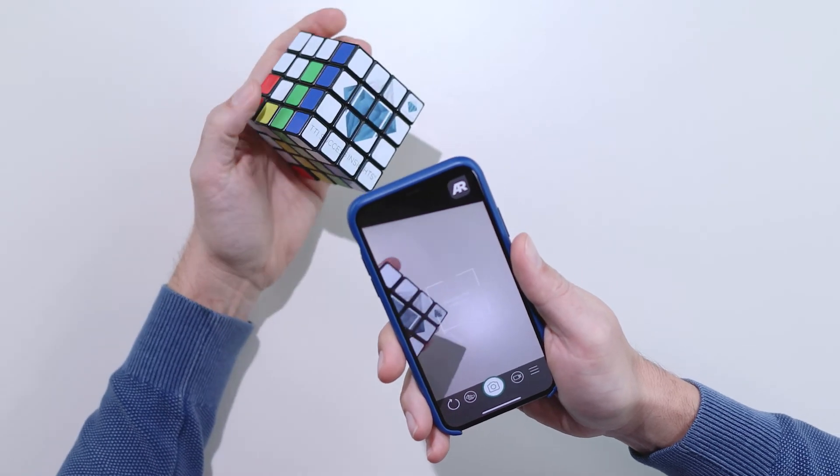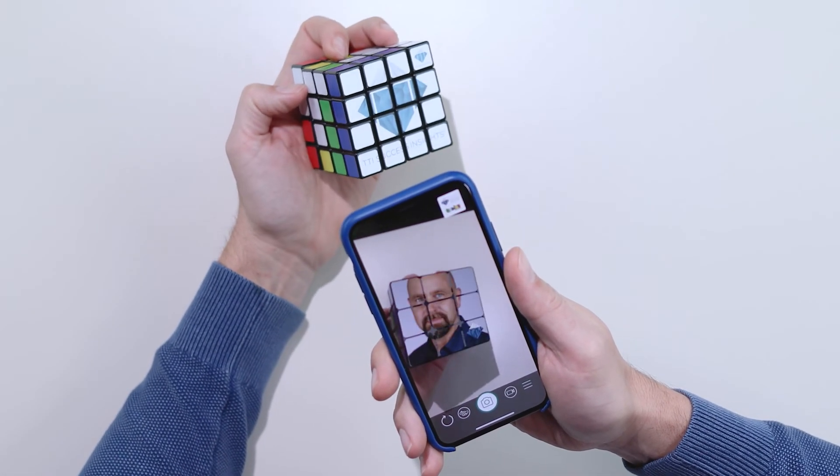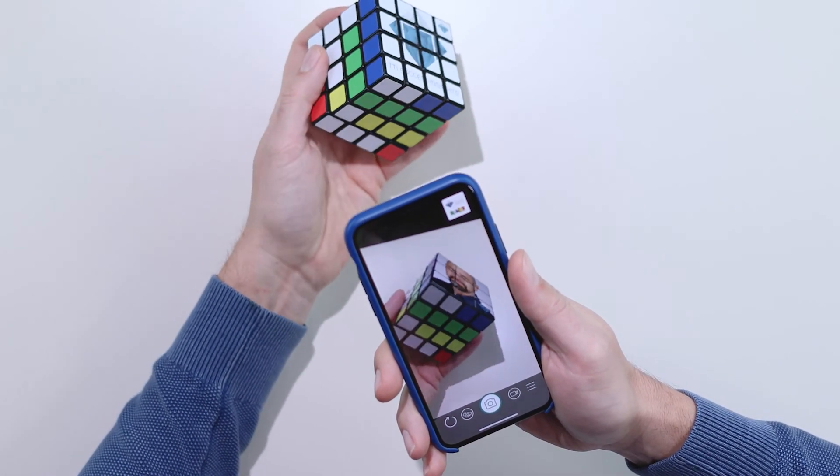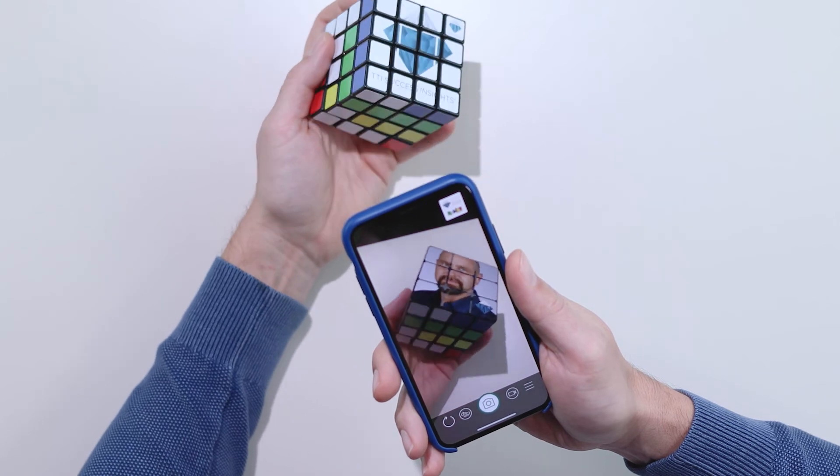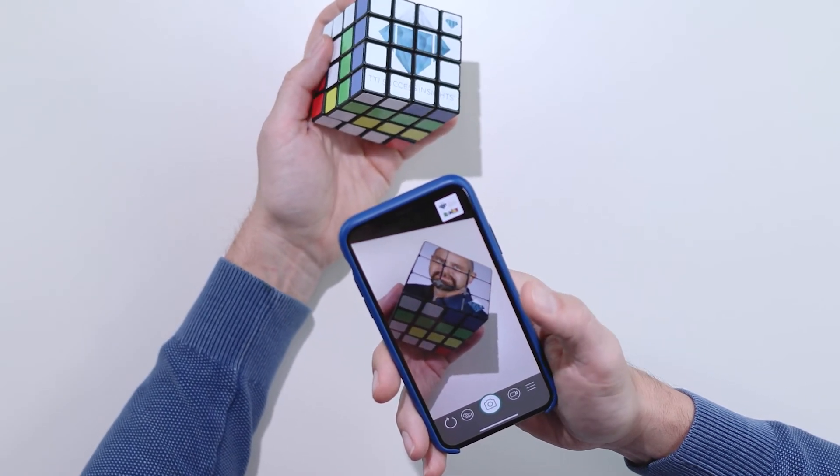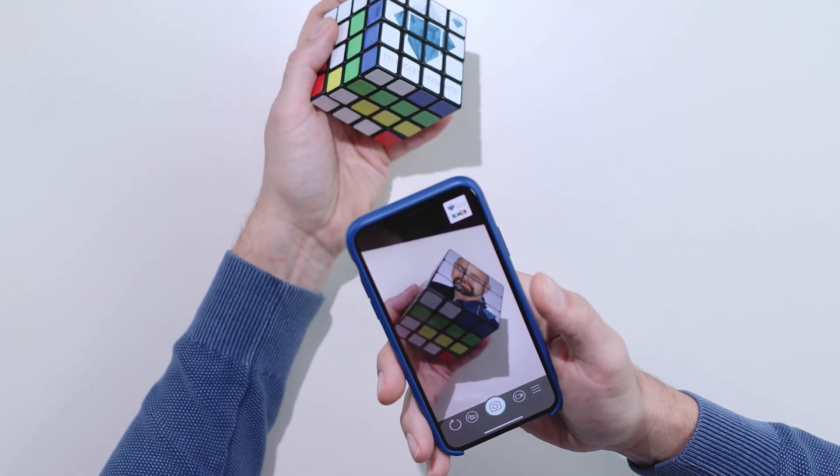Now, point at the TTI Success Insights logo once again. Your selfie or picture will be shown on the side of your TTI SI DISC cube. You can move your cube in 3D space and have the full AR experience.